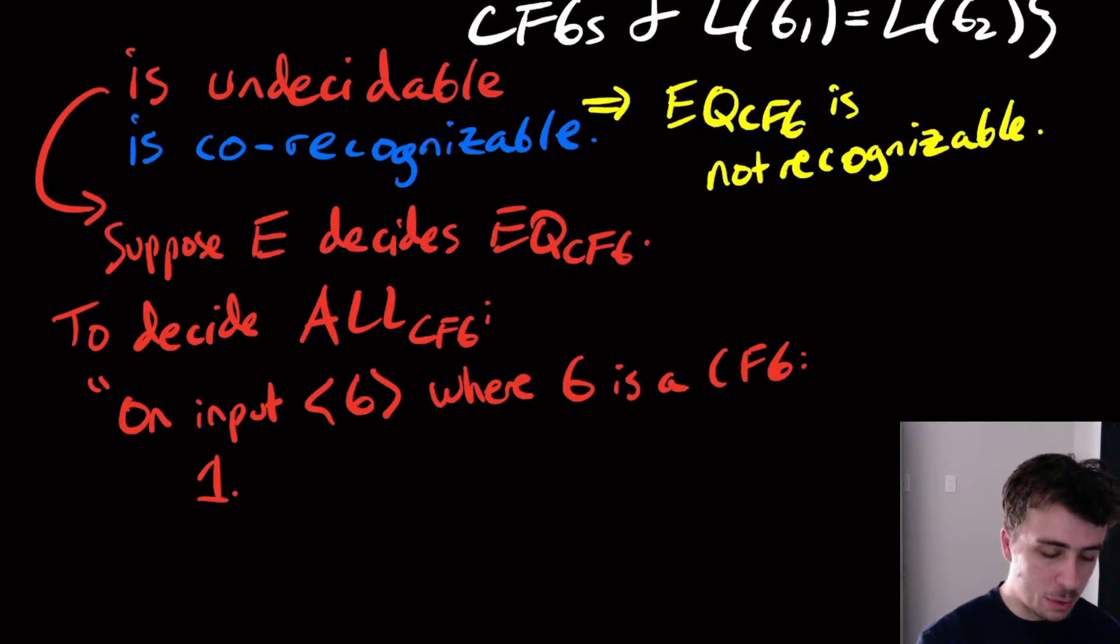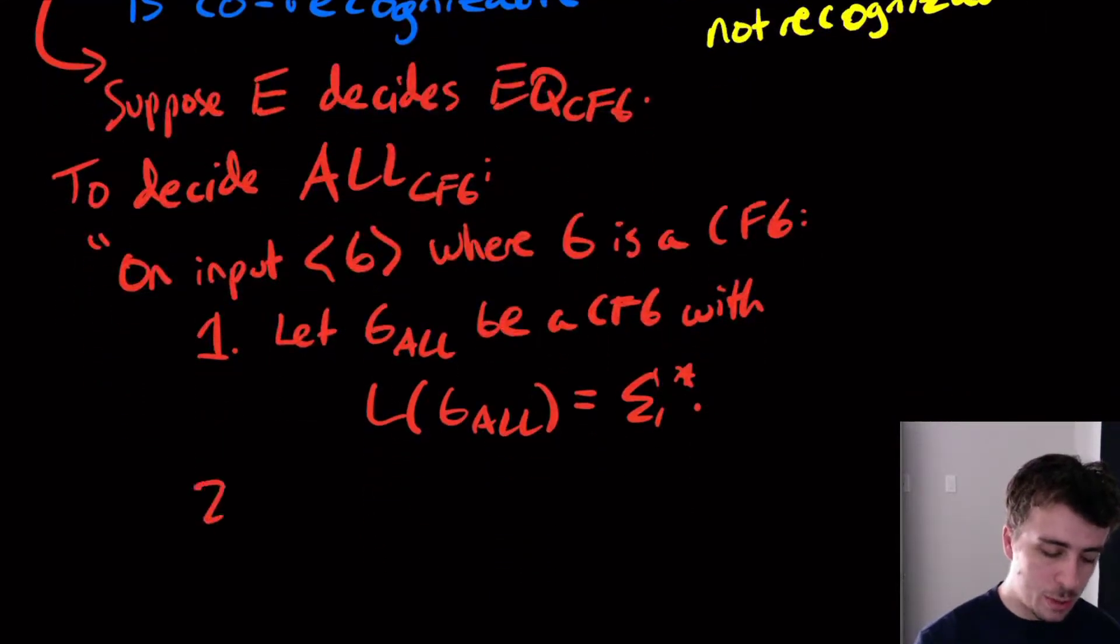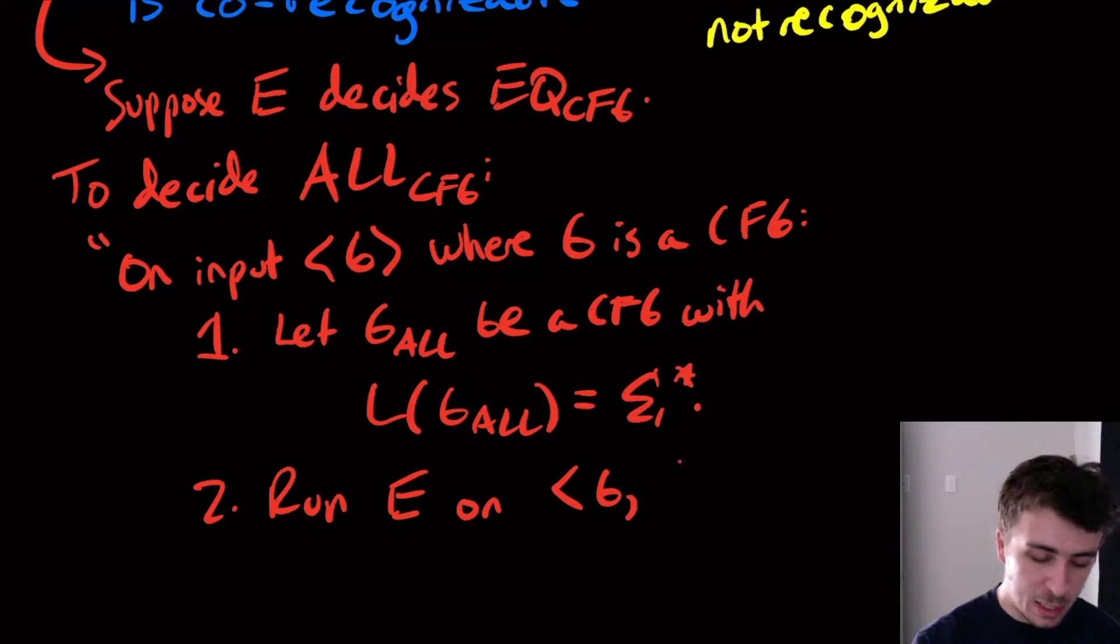The first step that we'll do is make a new grammar that definitely has sigma star as its language. So let G_all be a CFG with the language of this thing being sigma star. What we'll do is run that supposed decider E on the given grammar G and G_all, which is the thing that we just made.